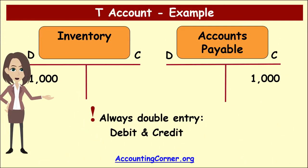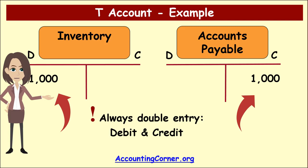Here is how this transaction is presented in the T-Accounts. Each account has its name — Inventory and Accounts Payable. The debit in the Inventory account is on the left side, and the credit in the Accounts Payable account is on the right side.